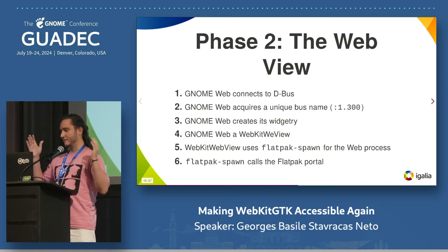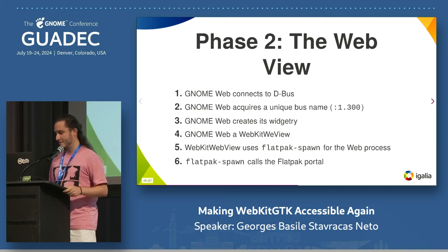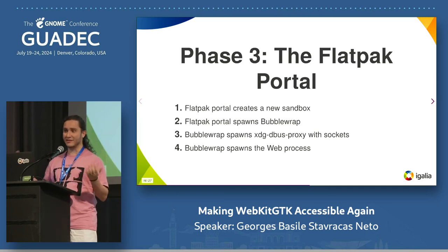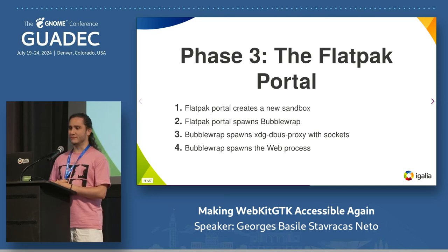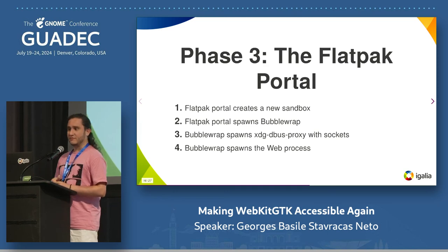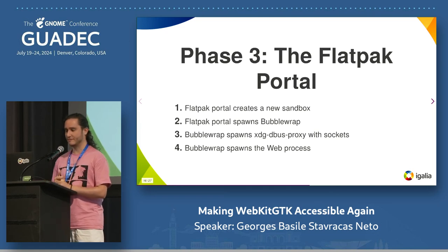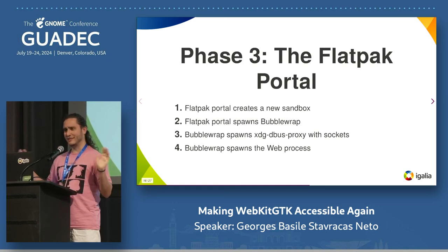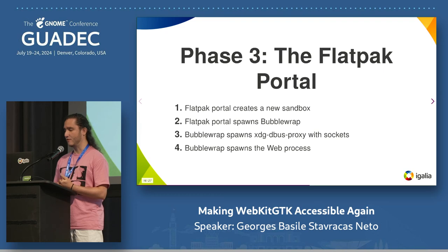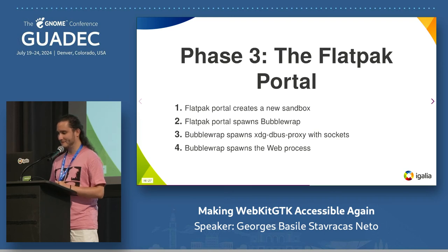Phase three: the Flatpak portal. The portal runs outside of the sandbox — it does not belong to the Epiphany sandbox bubble. So the portal receives from Epiphany a request to run a process in an equally or stricter sandbox. The Flatpak portal does exactly that: it spawns Bubblewrap, and Bubblewrap spawns XDG-DBus proxy with permissions for the sockets, and finally spawns the web process.